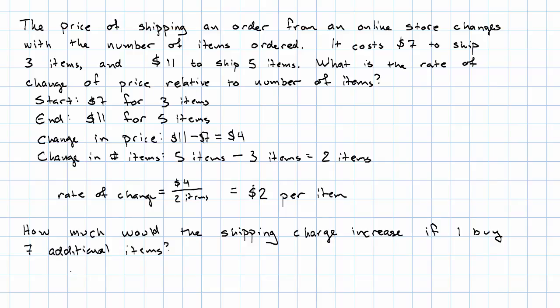Change in price equals the rate of change times the change in the number of items. So in this question, the change in price equals $2 per item times seven items, which will give me $14.